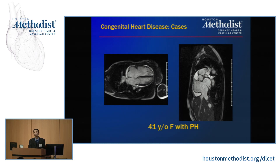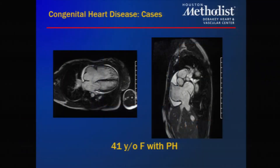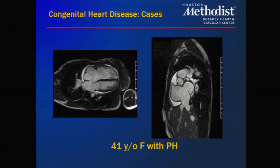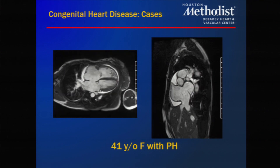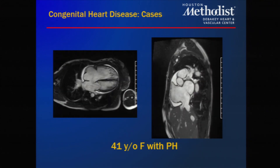We enjoy a strong referral base from our congenital colleagues, primarily from Dr. Huey Lynn and company. This lady was referred with findings of pulmonary hypertension and unexplained right-sided enlargement on echo. Echo did not see it, but you can clearly see on these studies that she had a very large sinus venosus ASD. We also performed quantification showing significant QP/QS shunting, which assisted our congenital heart colleagues in planning ASD closure in this patient.